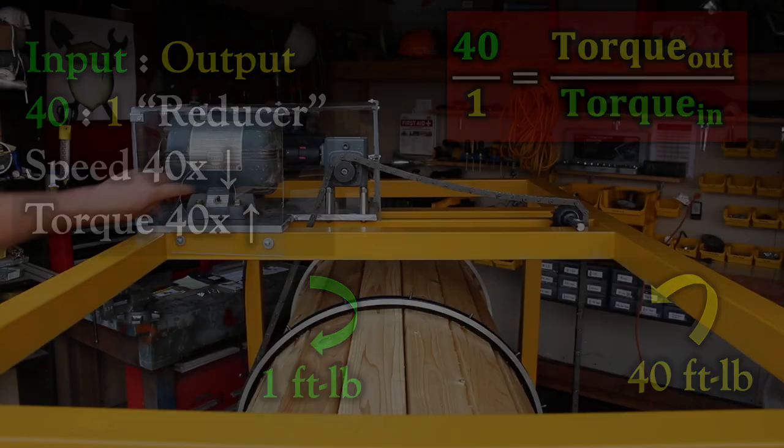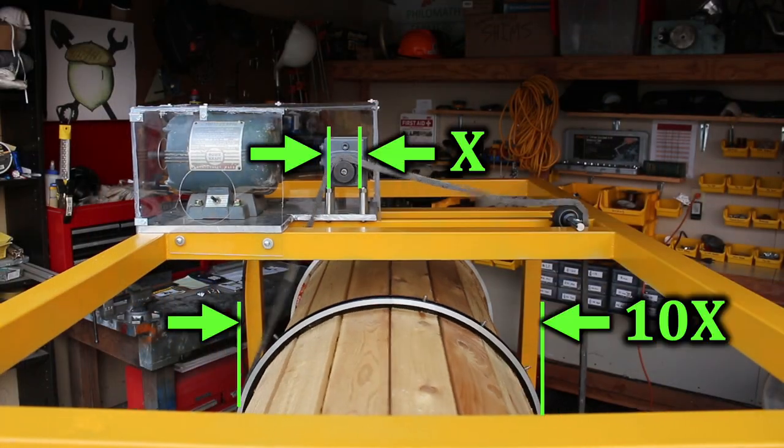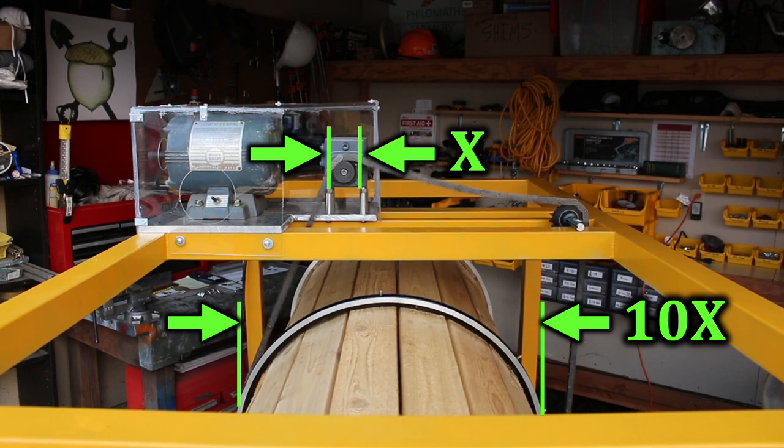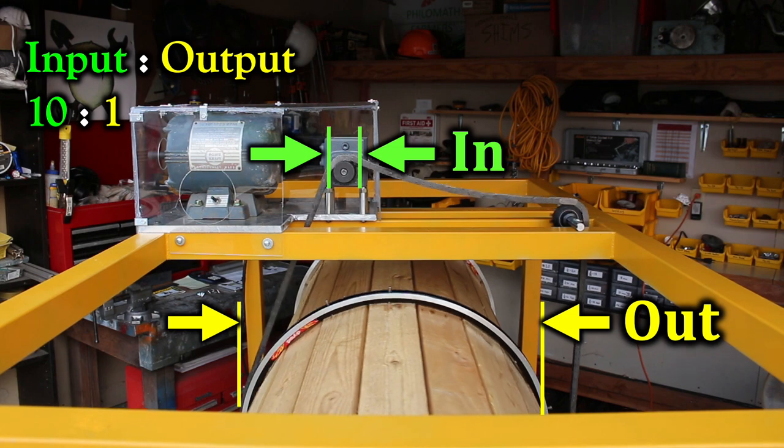Now here's our gearbox in action, driving a sprocket that's driving a barrel that's 10 times bigger than the sprocket. And so that means the sprocket-to-barrel gear ratio is 10 to 1.